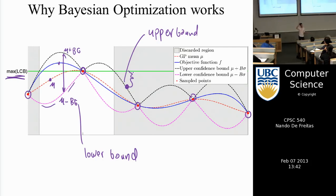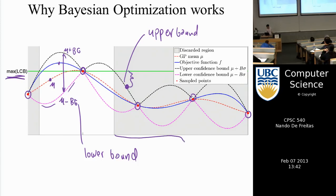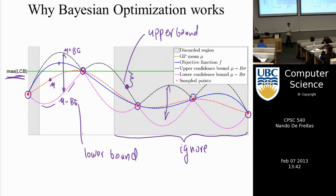So whenever you're below the lower bound of the best point you've already tried, it's not worth exploring there — you will not do better than what you already have. This means everywhere the black upper-bound curve is below the green line, we can just ignore it. Even though there may be regions of high variance there, we know it's pointless to explore them.